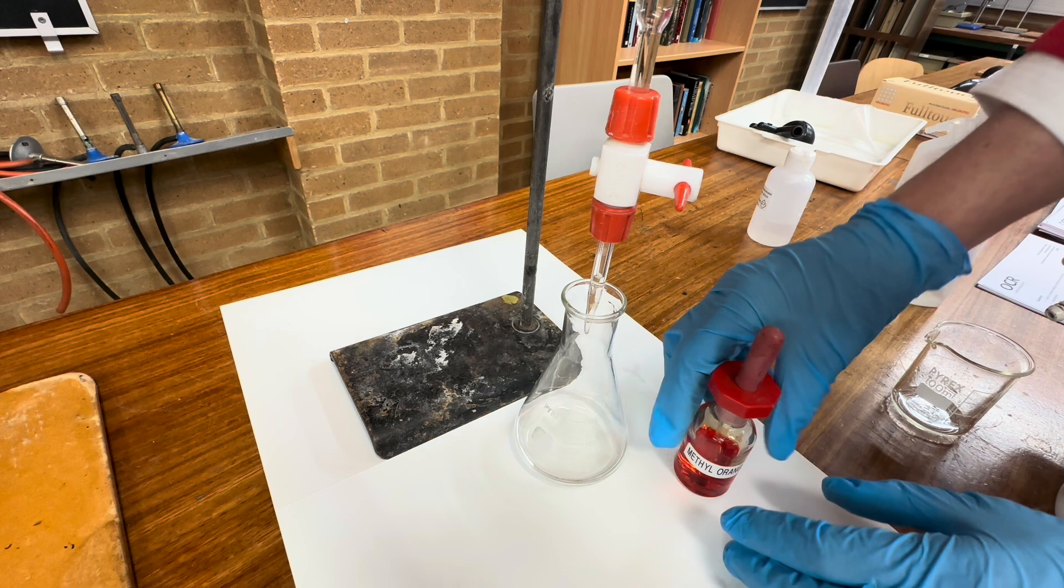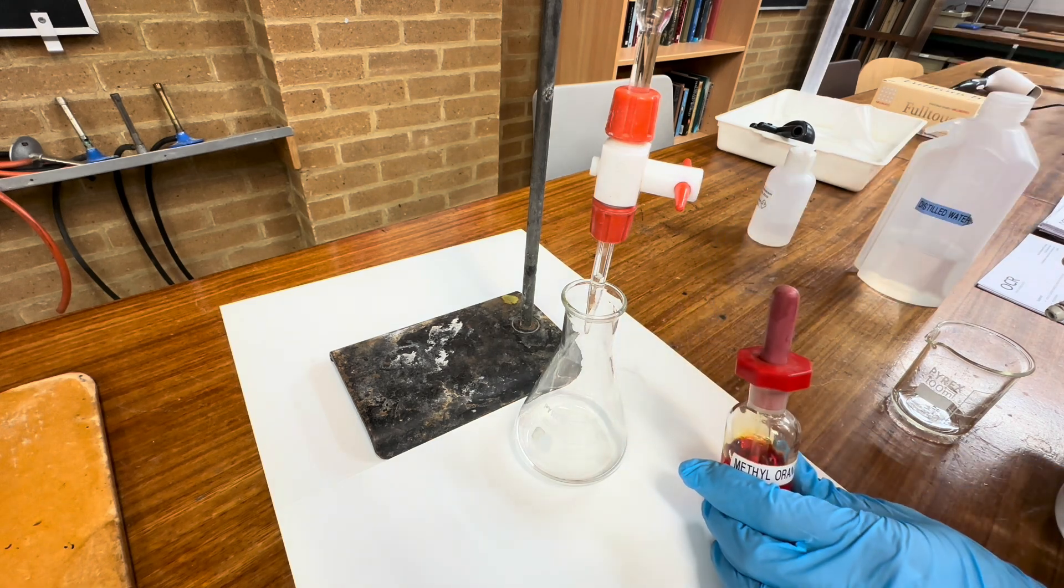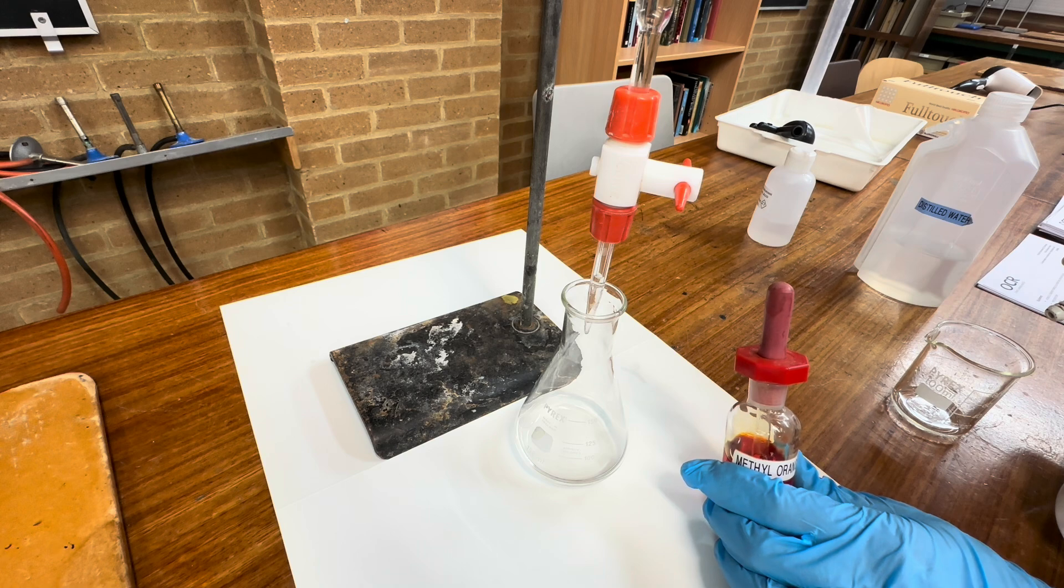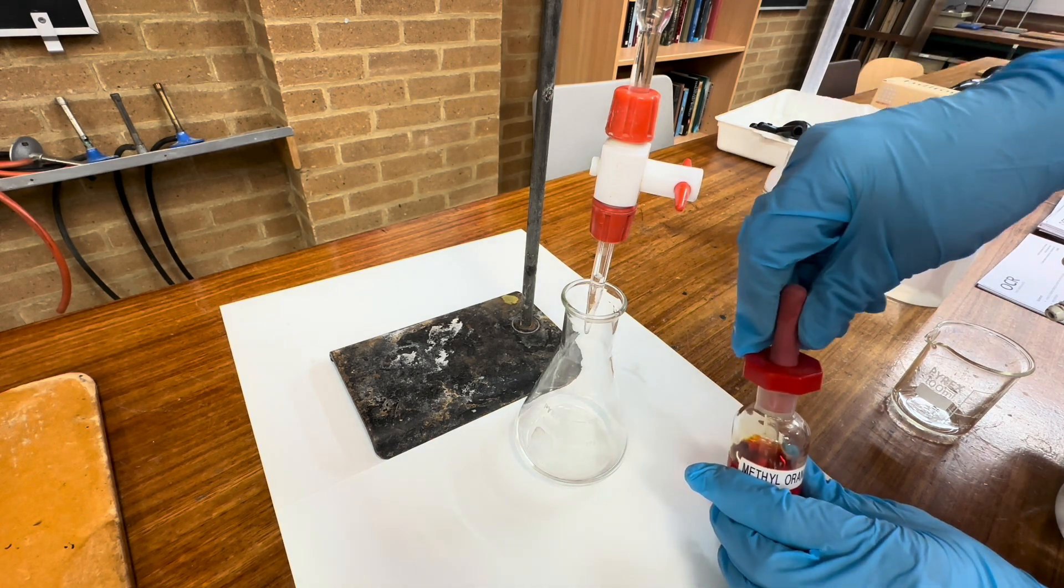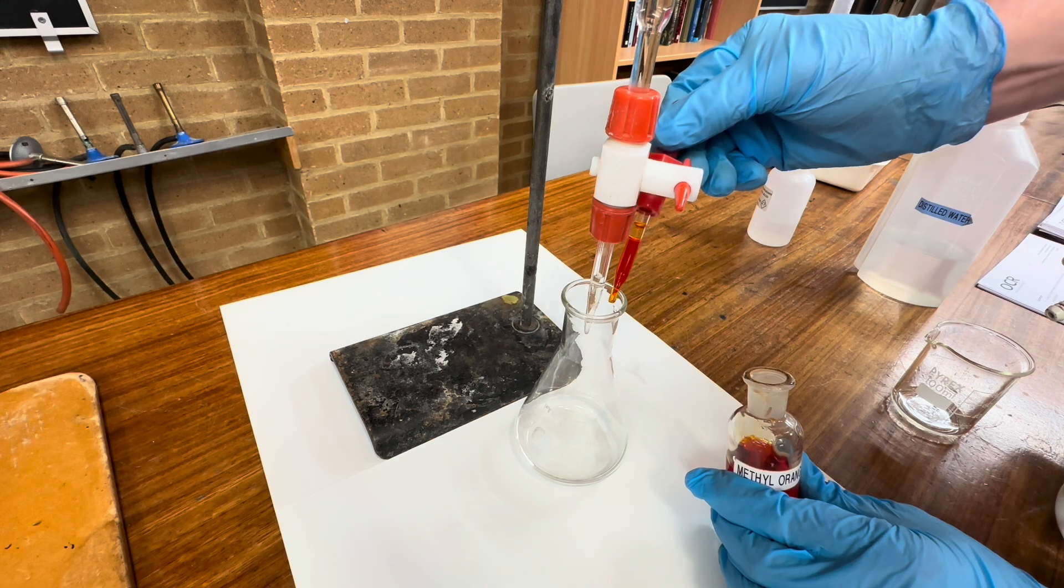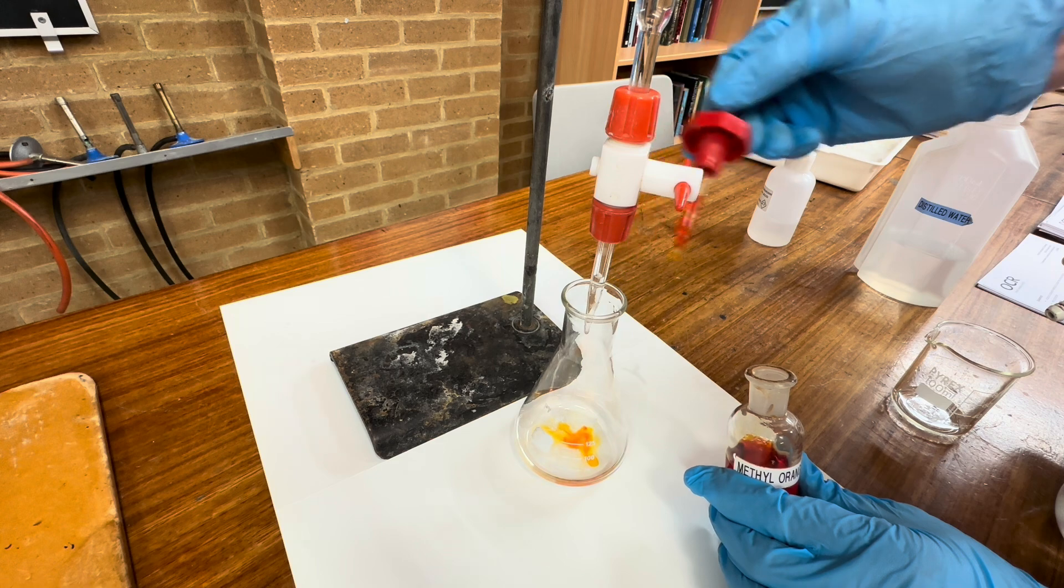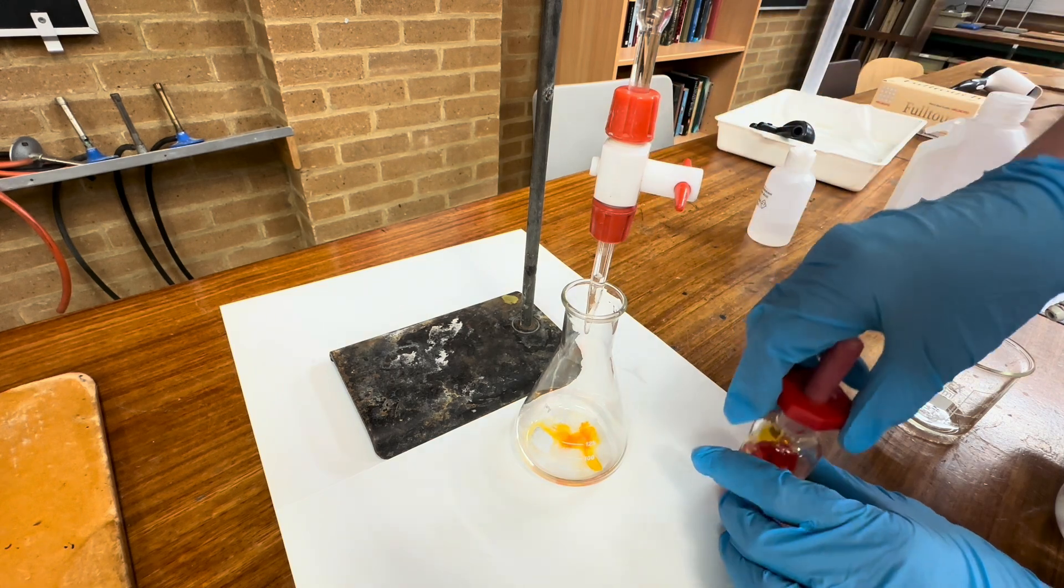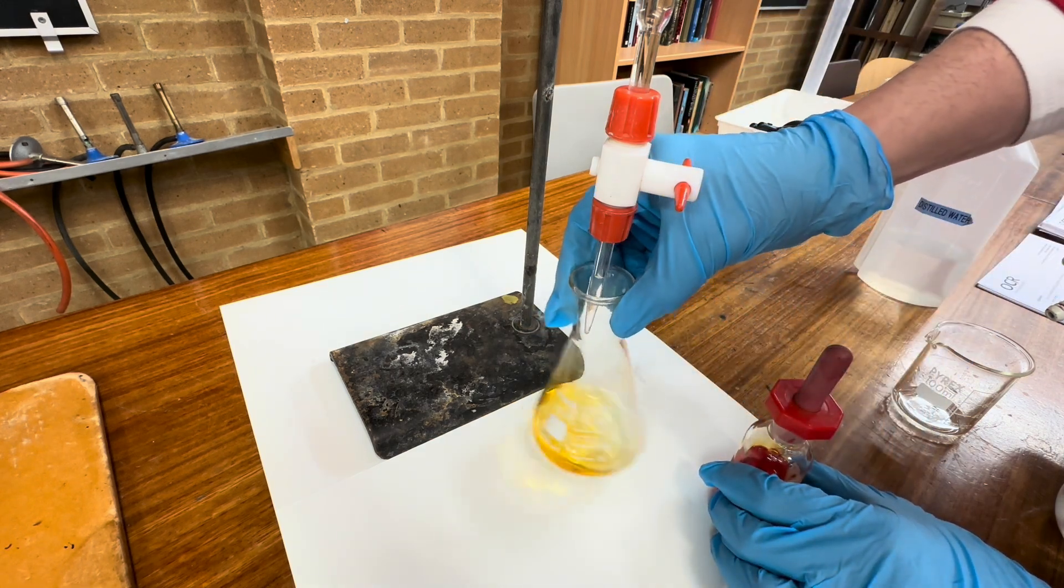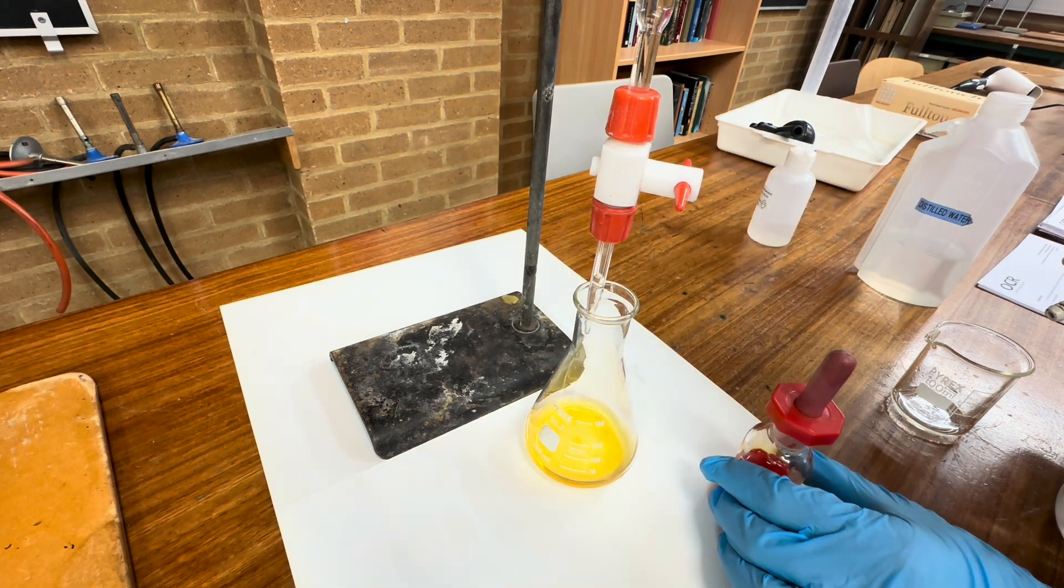We must add the indicator, in this case methyl orange. Methyl orange will go from yellow to orange when the end point is reached. So we take a few drops of this and add. There we go. And throughout we're going to swirl so that we get a nice observable color change.